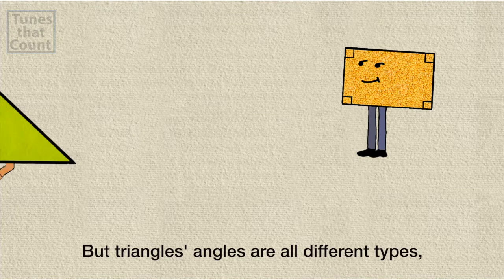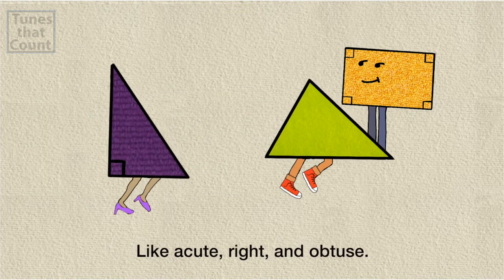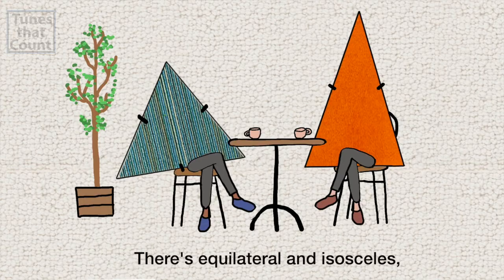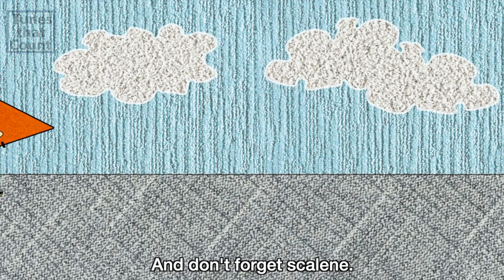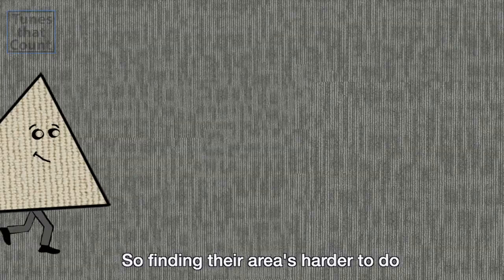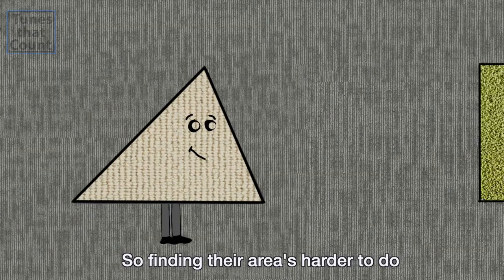But triangles, angles are all different types, like acute, right, and obtuse. There's equilateral and isosceles. Don't forget scalene. So finding their area's harder to do.